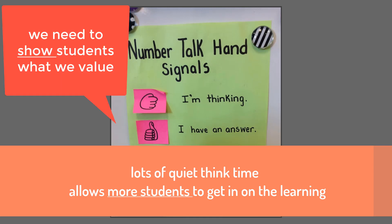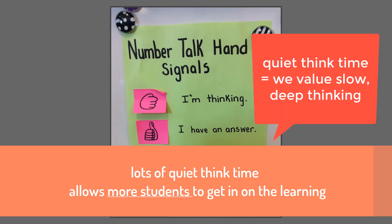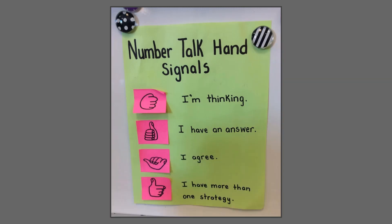If we can create a culture where students are comfortable in that quiet think time and comfortable waiting for other students to think, then we are valuing slow, deep thinking, not quick, superficial thinking. If they have an answer and their thumb is up, we can wait until all other students have an answer. We encourage students at that time to be thinking of more than one strategy, at which time they're going to raise another finger and another finger, so that students all have something to do during that quiet think time.